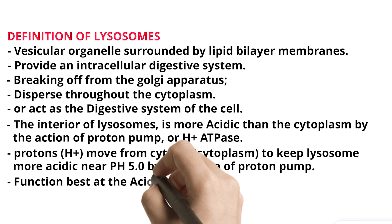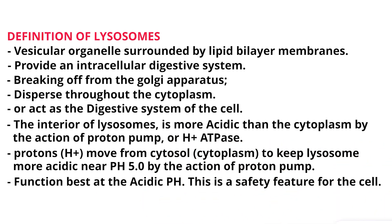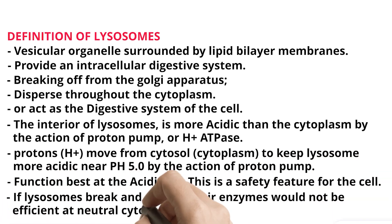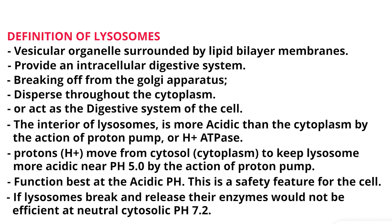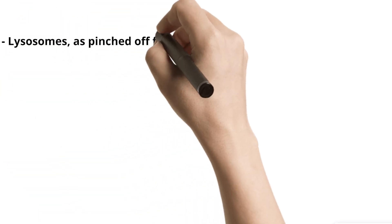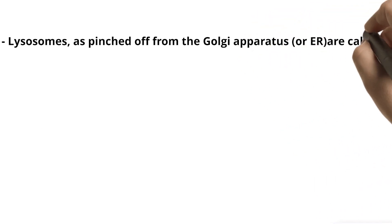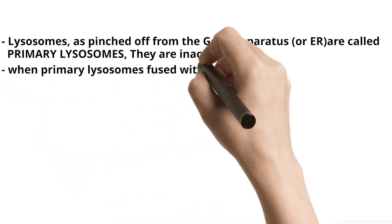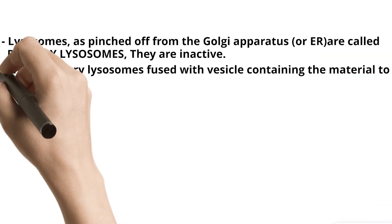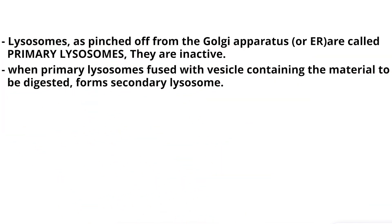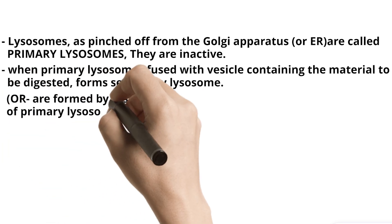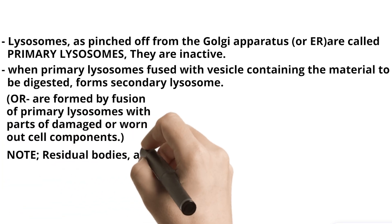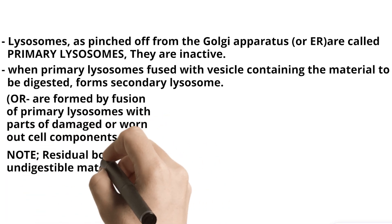Lysosomes function best at acidic pH. This is a safety feature for the cell — if lysosomes break and release their enzymes, they would not be efficient at neutral cytosolic pH 7.2. Lysosomes pinched off from the Golgi apparatus or ER are called primary lysosomes; they are inactive. When primary lysosomes fuse with a vesicle containing material to be digested, they form a secondary lysosome, or by fusion with parts of damaged or worn-out cell components. Note: residual bodies are undigestible materials remaining in lysosomes.